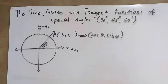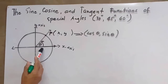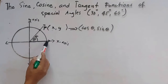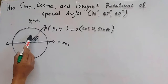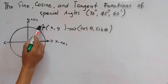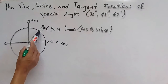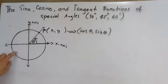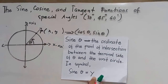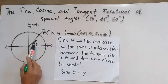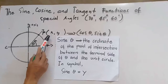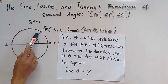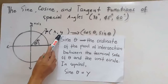Consider this unit circle with theta drawn in standard position — standard position because the initial side coincides with the positive side of the x-axis. Theta moves in a counterclockwise direction. The terminal side of theta intersects the unit circle at point P, whose coordinates are x, y. So from here, we can define sine theta: sine theta is the ordinate of the point of intersection between the terminal side of theta and the unit circle. In symbol, sine theta is equal to y.